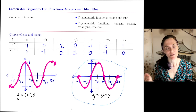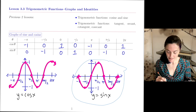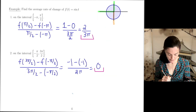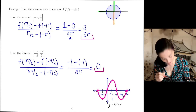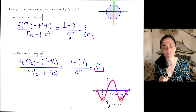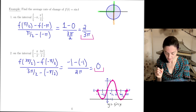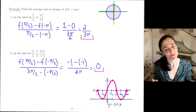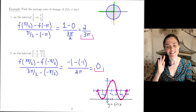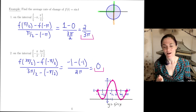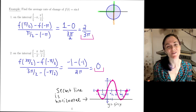Why does this make sense? Looking at the graph of the sine function: on the interval from −π/2 to 3π/2, you can see the secant line is a horizontal line, which has slope 0. This explains why the average rate of change is 0 on this closed interval. The secant line here is horizontal — a super cool example.